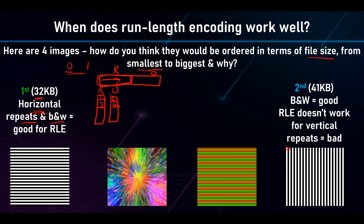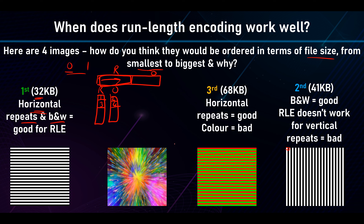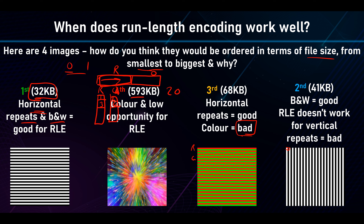The color image with horizontal repeats is third — horizontal repeats are good but using color is bad since color requires more bits per pixel. The color photo-like image is worst — it's almost 20 times bigger than the best black and white image because it uses color and there's very low opportunity for run length encoding, as almost every consecutive pixel is a different color.